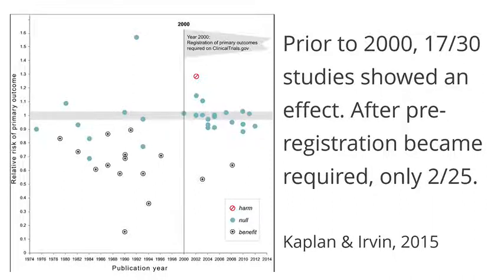So on the left we see that from all the big randomized controlled trials, some don't show any statistically significant results, but many actually do. 17 out of 30 studies before 2000 actually show a significant result. After pre-registration became required, this percentage dropped to only 2 out of 25.